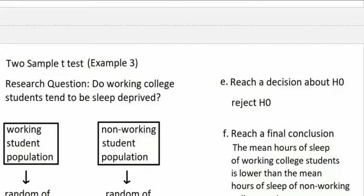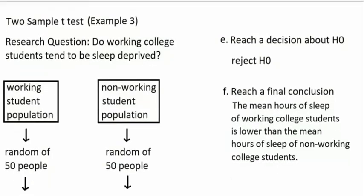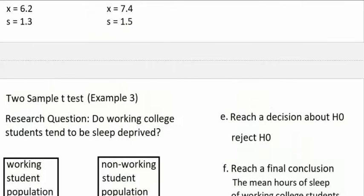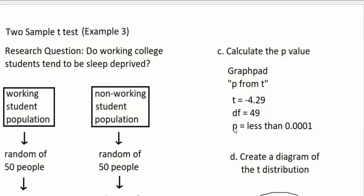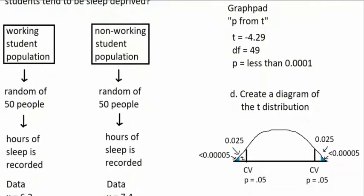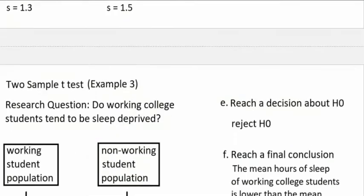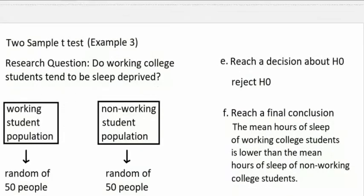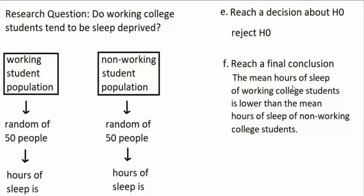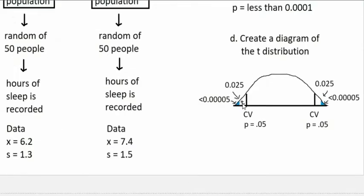Now let's reach a decision about the null hypothesis. If the p-value is less than .0001, it's definitely less than .05. Notice the t-score is a negative number. If t is negative and p is .05 or less, those two things together tell you the t-score is in the negative rejection region — out at that negative critical value. So we reject the null hypothesis and conclude confidently that the mean sleep of working students is lower than the mean of non-working students, because the t-score is in the negative rejection region.